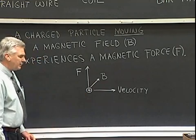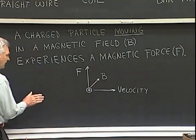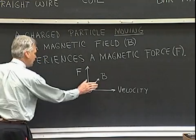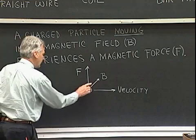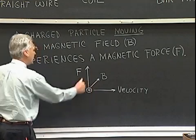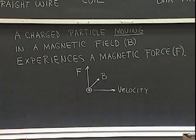In this case, if the velocity of the charged particle is to the right and it's a positive charge, and there's a magnetic field inward, then there will be an upward force on that charged particle.